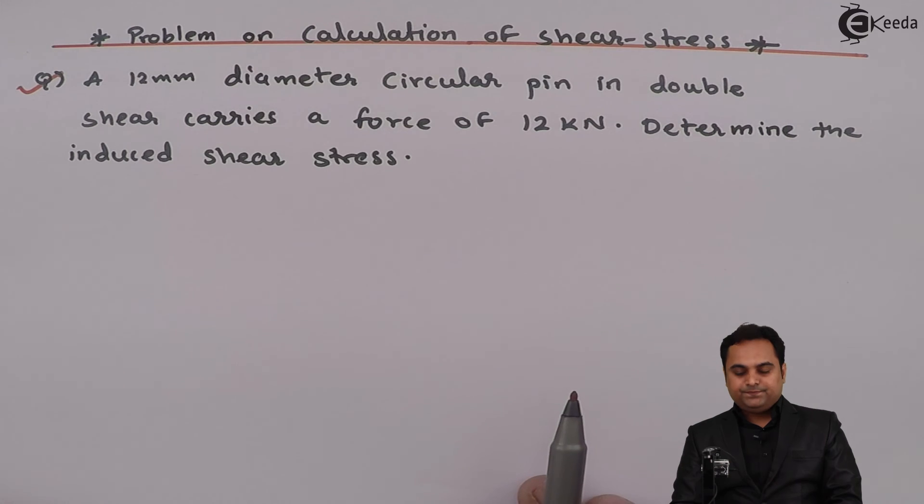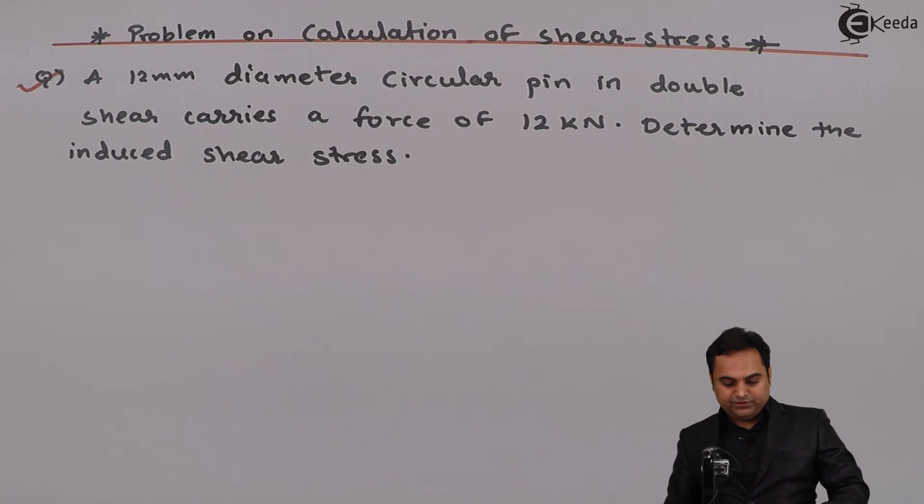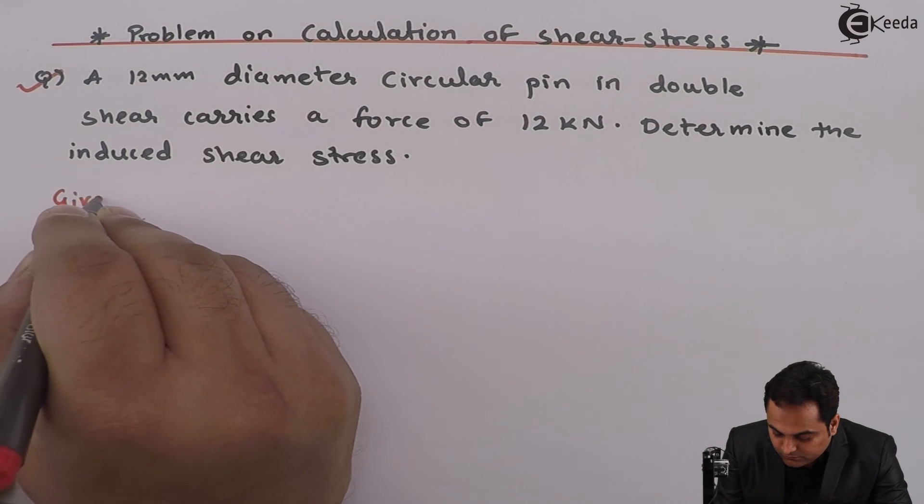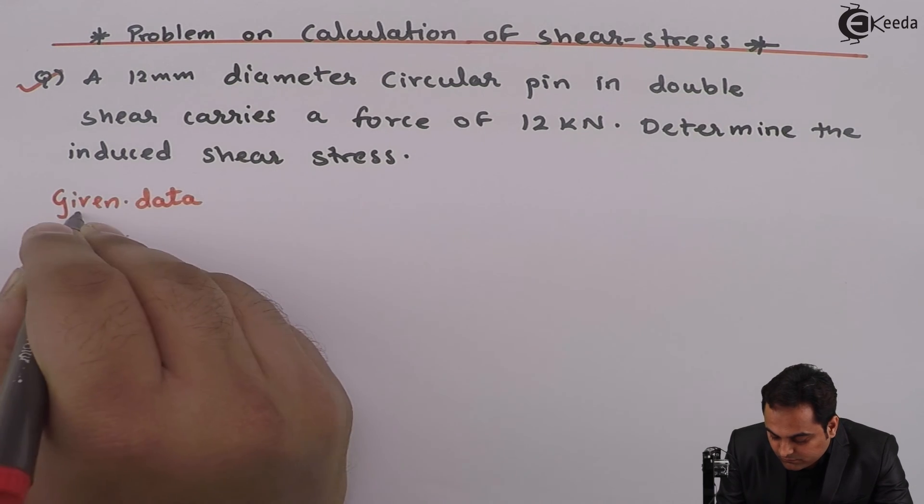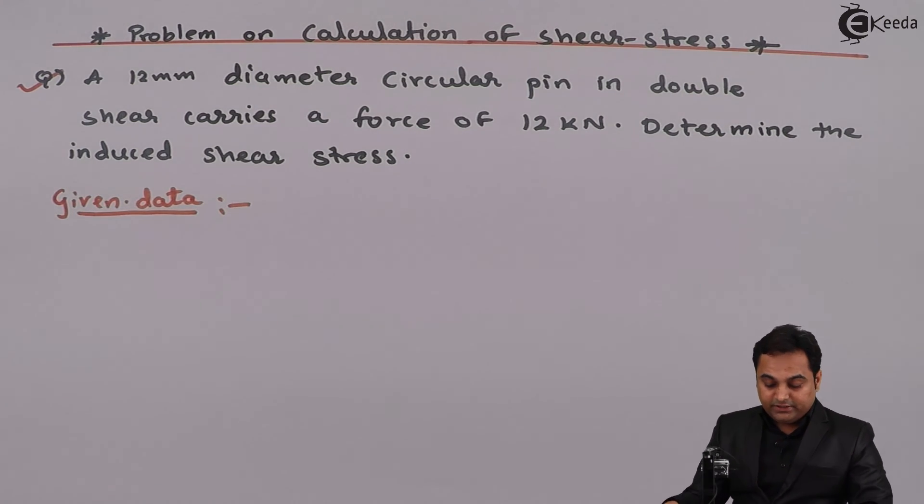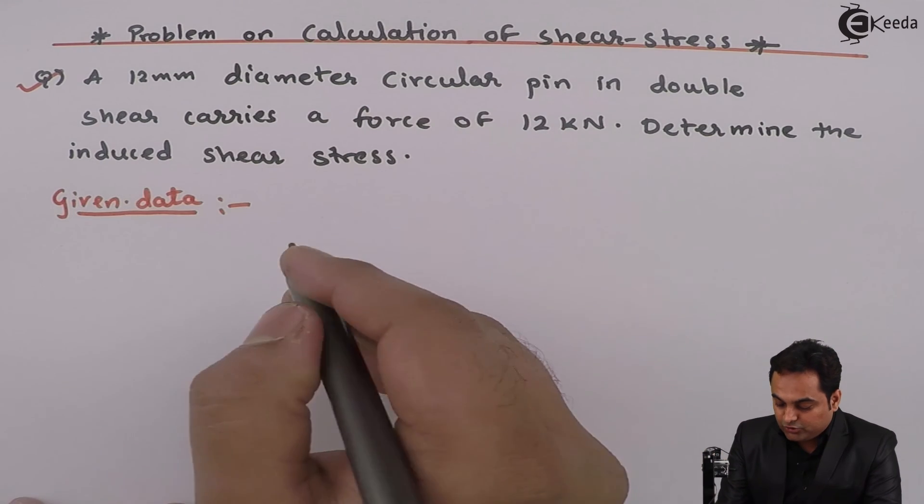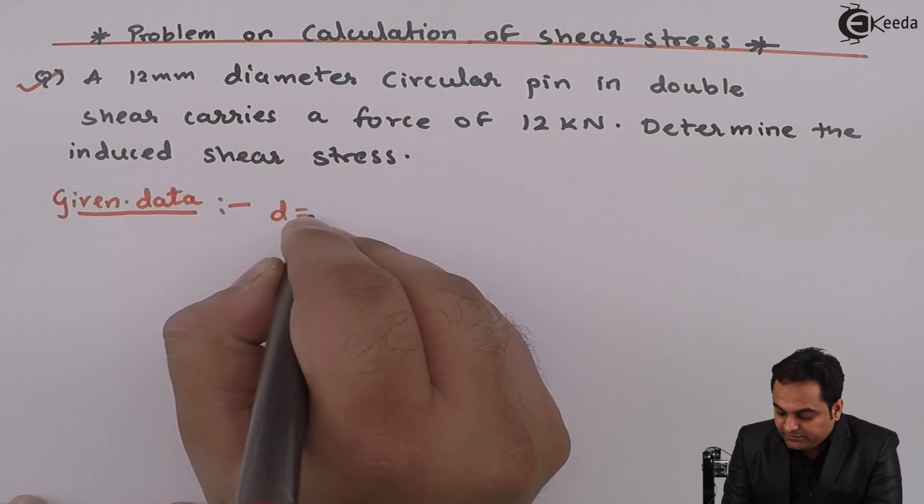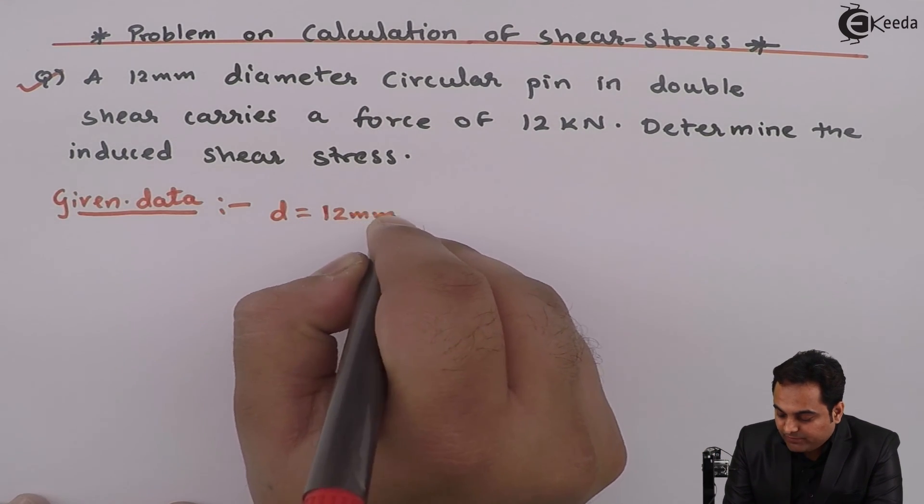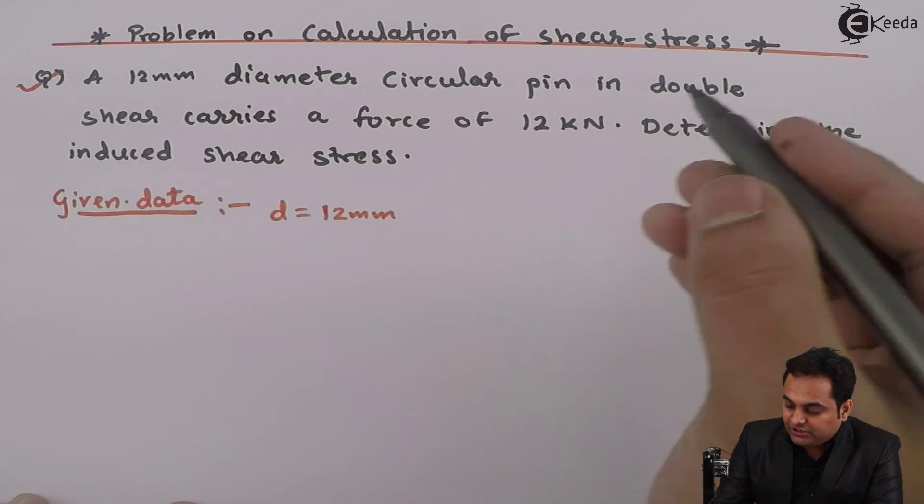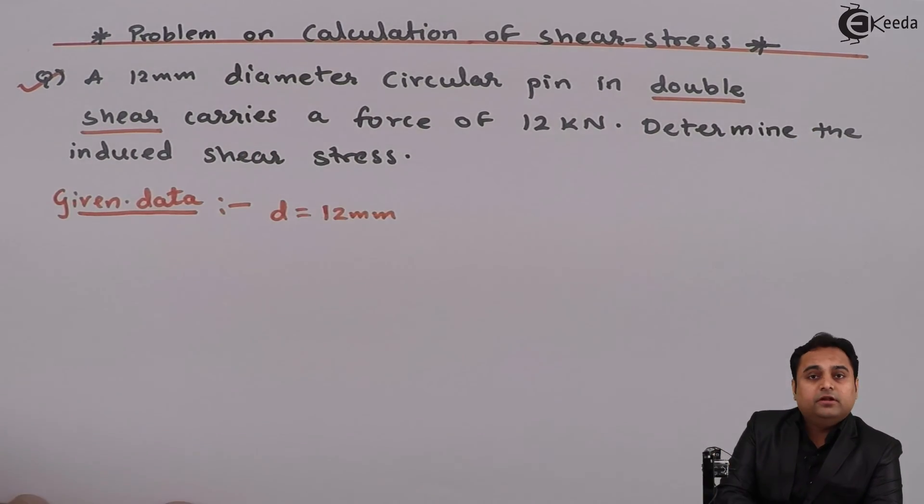I'll write the data for this question. It is given that a 12mm diameter circular pin, so I'll denote it by D equals 12mm, in double shear. Now let me explain the meaning of this double shear with the help of a diagram.